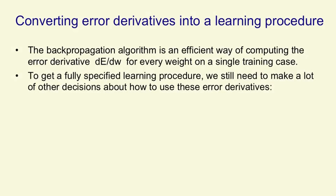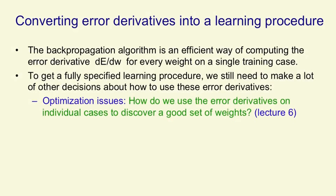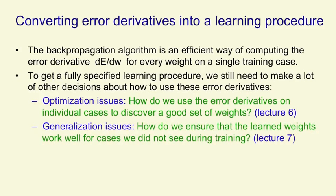We need to make lots of other decisions. Some of these decisions are about how we're going to optimise — that is, how we're going to use the error derivatives on the individual cases to discover a good set of weights. Those will be described in detail in Lecture 6. Another set of issues is how do we ensure that the weights that we've learned will generalise well — that is, how do we make sure they work on cases that we didn't see during training? Lecture 7 will be devoted to that issue.